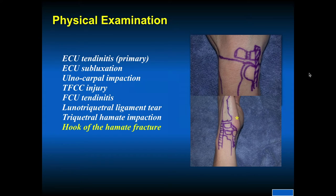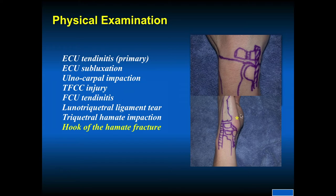On physical exam: tendinitis subluxation, ulnar carpal impaction. This can depend on the length of the ulna — you can have the ulna being longer or shorter, ulnar positive or negative. You can also have a TFCC injury. On the volar side, you can have flexor carpi ulnaris tendinitis, lunotriquetral ligament tear, or triquetral hamate impaction. Don't miss a hook of the hamate problem. This gives you markings of what to think about with ulnar-sided wrist pain, which is common in a racket sport athlete.